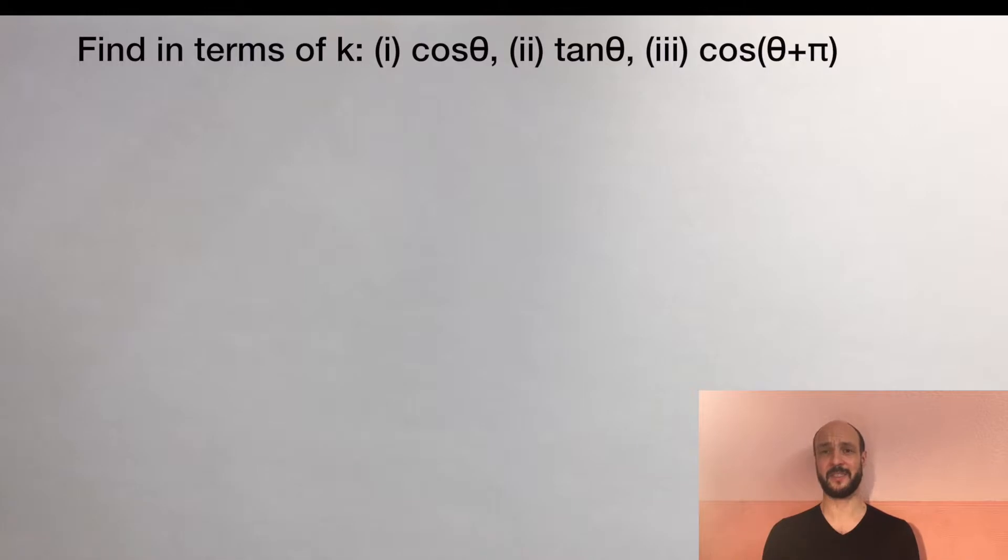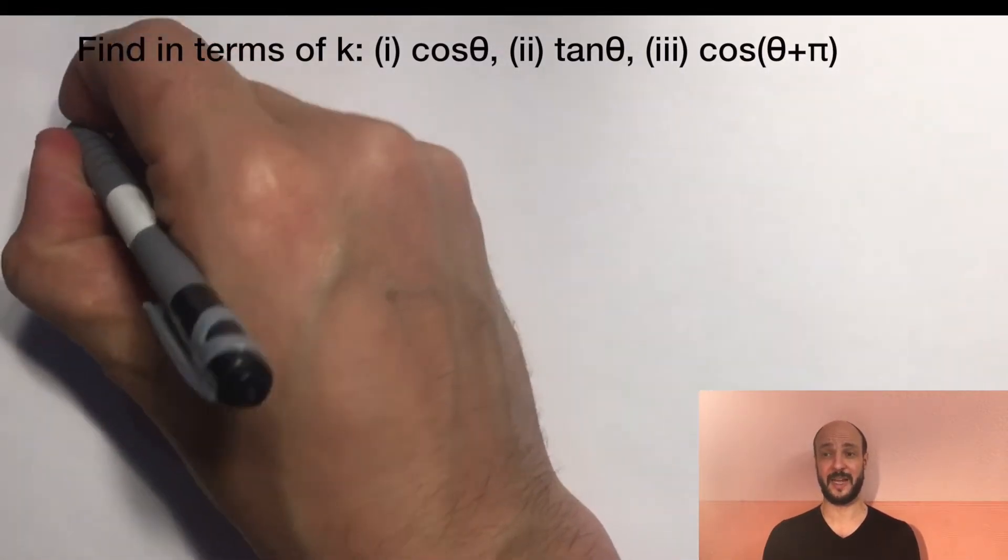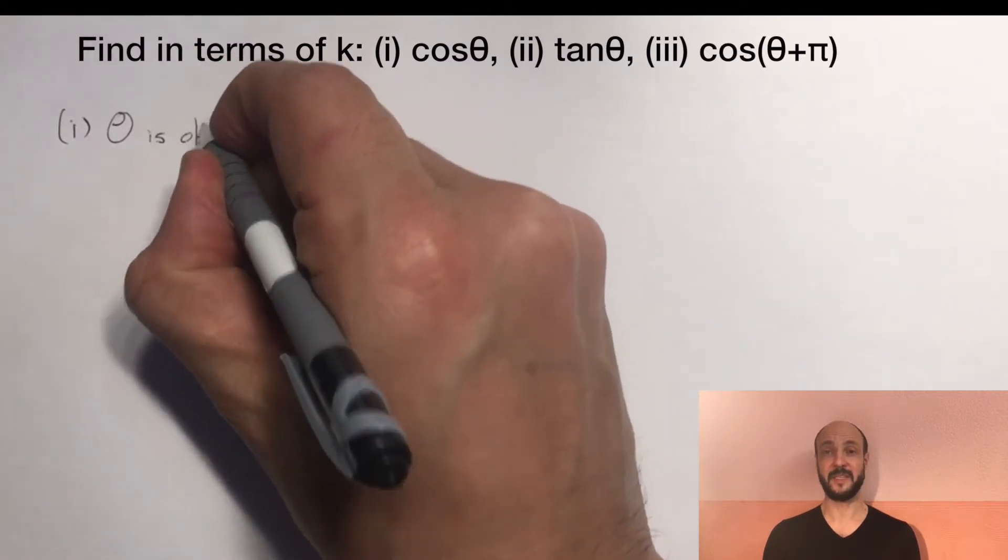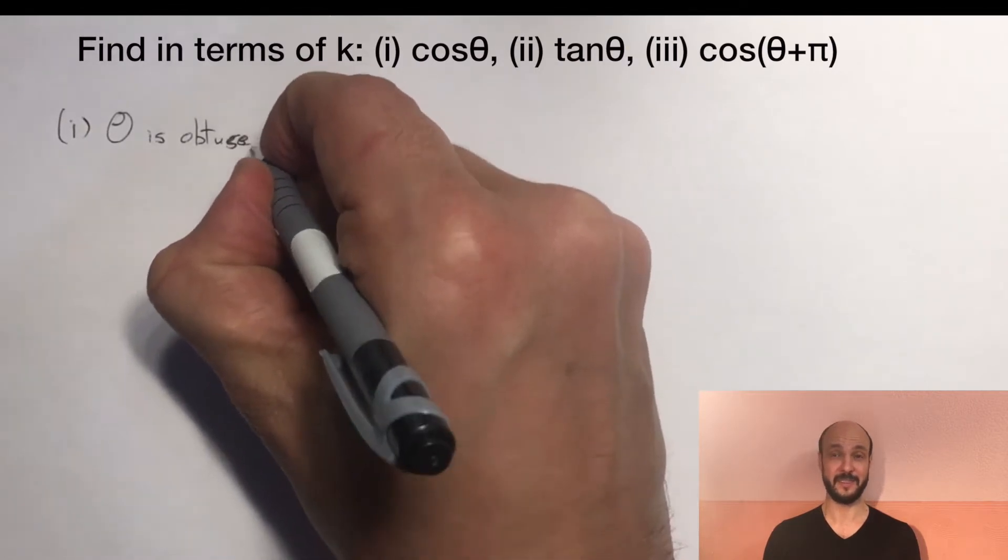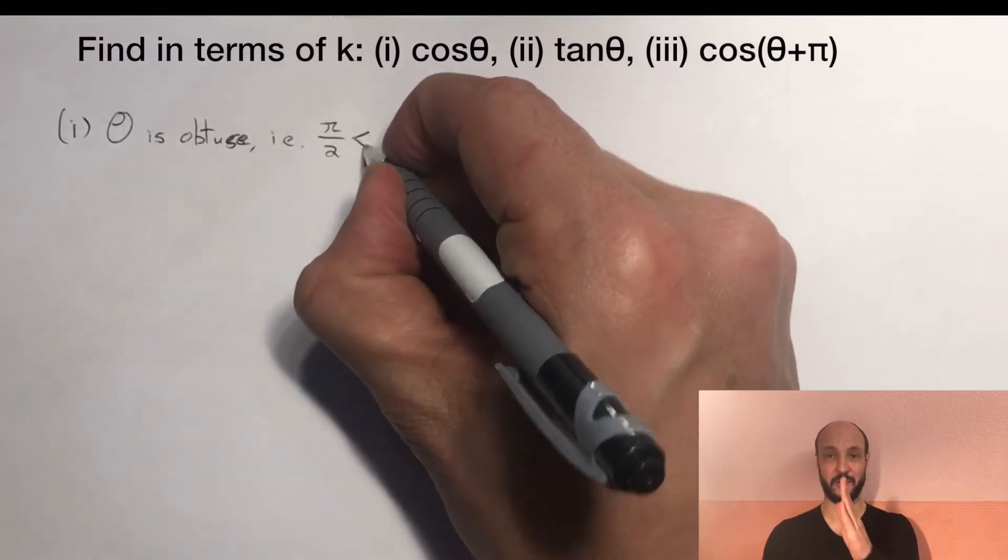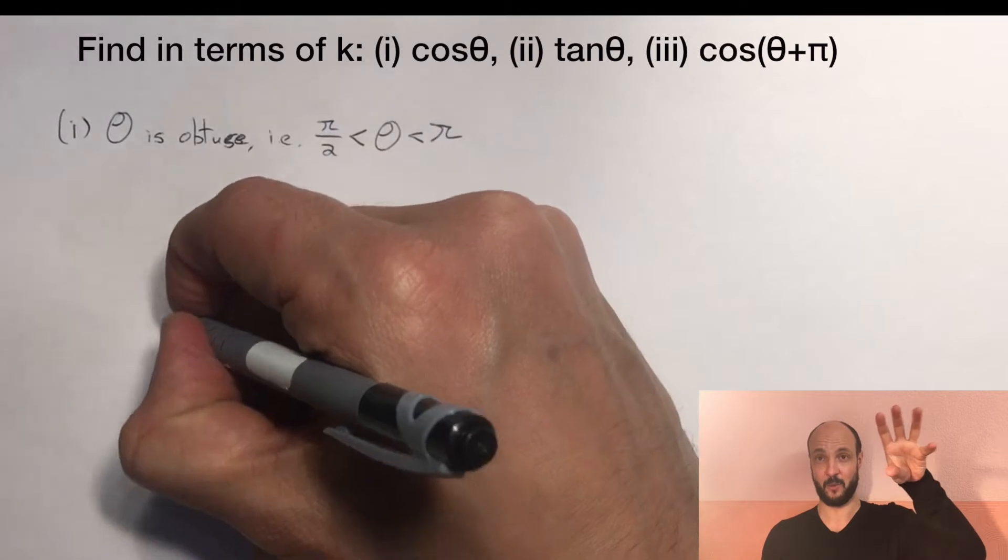Looking at this question, the first thing we notice is that theta is an obtuse angle. An obtuse angle measured in radians means it's between pi over 2 radians and pi radians, that's 90 and 180 degrees. So if it's over pi over 2 and below pi radians, we're in the second quadrant.